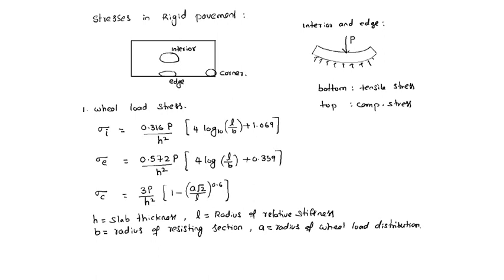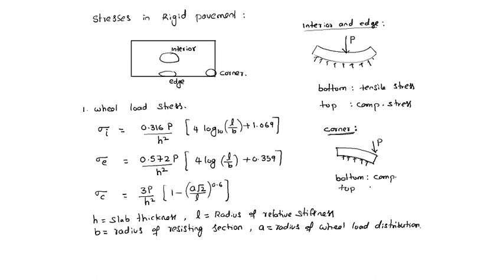In the case of the corner region, due to wheel load bending, the behavior is reversed: compressive stress develops at the bottom and tensile stress develops at the top. This is due to wheel load.